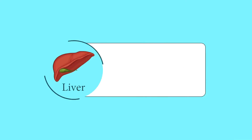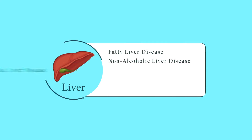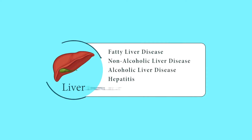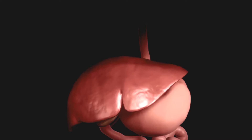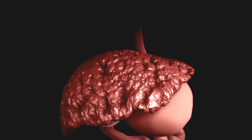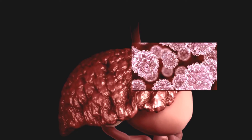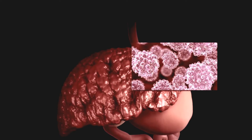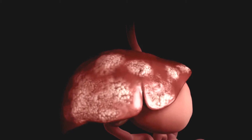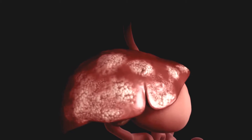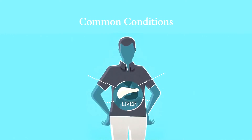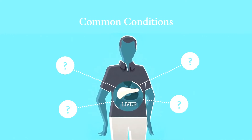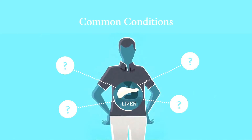The liver is prone to several diseases — a few benign, a few serious, a few acute, and some chronic. It is subject to a variety of conditions which could lead to its failure. What are some of the common causes and conditions that need our attention?